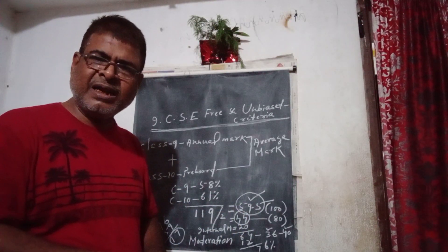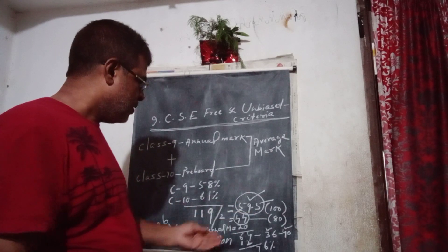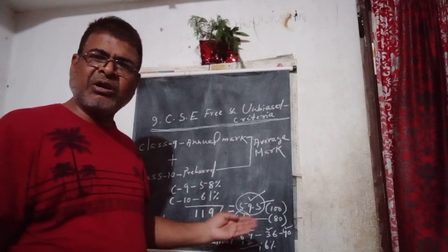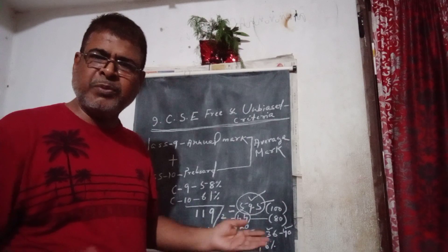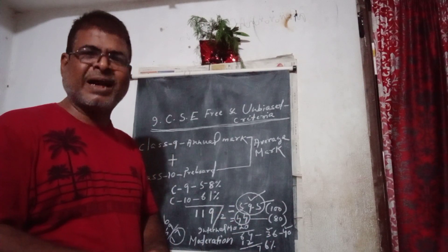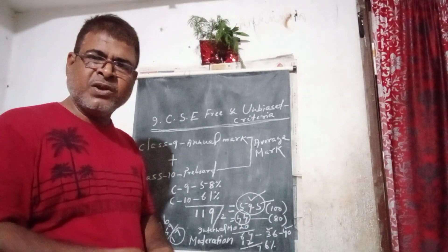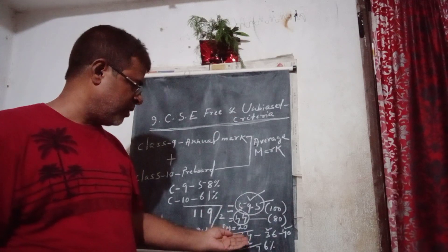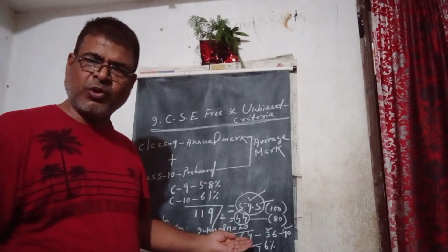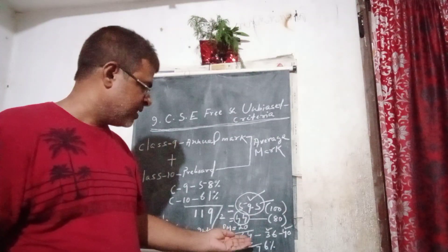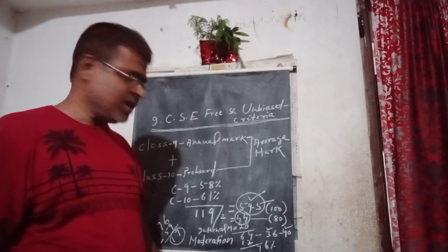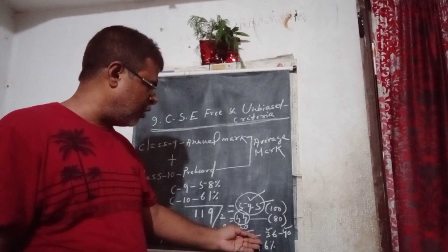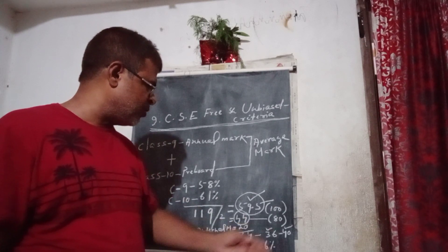So we get 44 out of 80, which represents the external marks. Then we add the internal marks — that means project marks and practical marks — which are 20 marks. So 44 plus 20 internal marks equals 64. Now, how much is that less than 100?